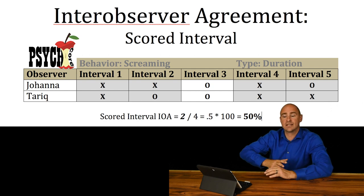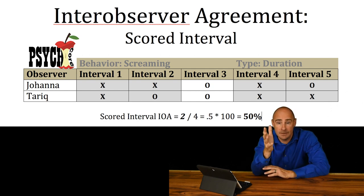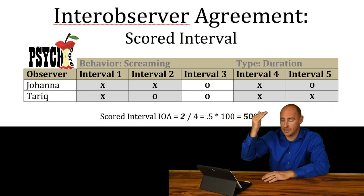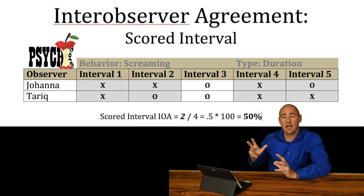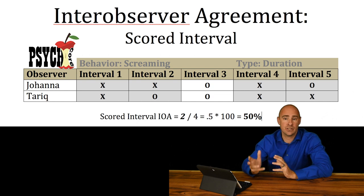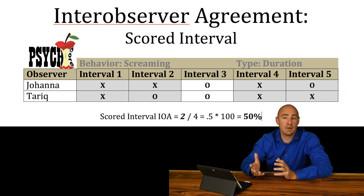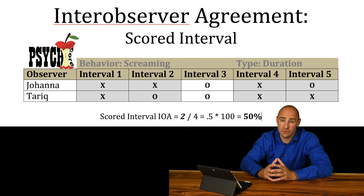We're going to take the number of intervals where they agreed perfectly and divide it by the total number of intervals where they actually scored it, and then we're going to get a ratio. We'll multiply that by 100 to get a percent inter-observer agreement. That's the scored interval inter-observer agreement method.